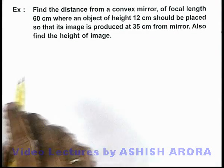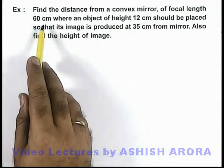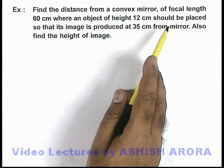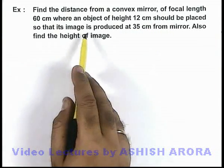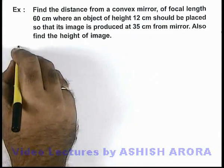In this example, we are required to find the distance from a convex mirror of focal length 60 centimeters where an object of height 12 centimeters should be placed, so that its image is produced at 35 centimeters from the mirror. Also, we are required to find the height of the image.